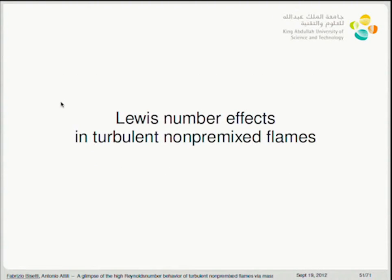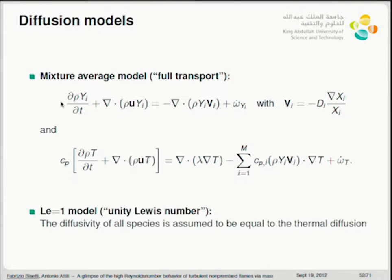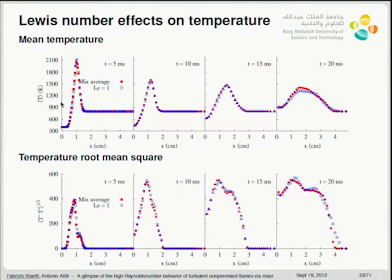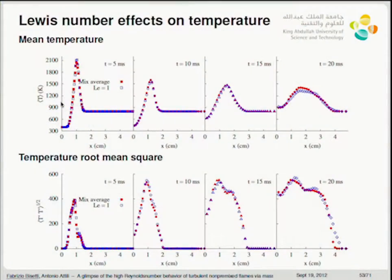Moving on to Lewis number effects in turbulent non-premixed flames. We've run the same simulation with two models: the mixture-average model (full transport) and the Lewis-number-one model (unity Lewis number), where diffusivity of all species is assumed equal to thermal diffusion. Here is a comparison — probably the most important takeaway. The mean temperature plotted as a function of the crosswise direction shows that symbols indicating mixture-average and those indicating unity-Lewis-number fall on top of each other for any time step. The same is true for the fluctuations — there is literally and virtually no difference between the two results irrespective of the diffusion model.